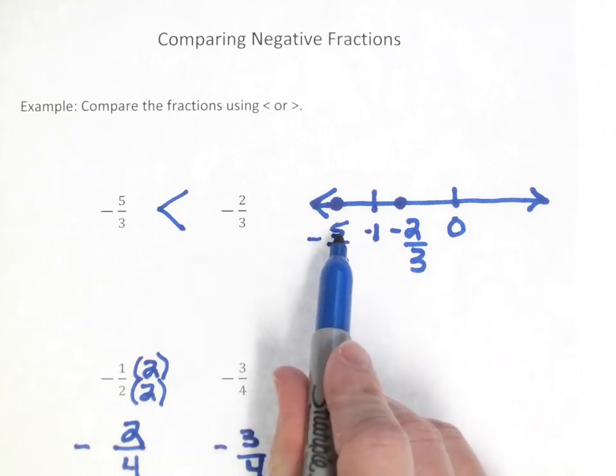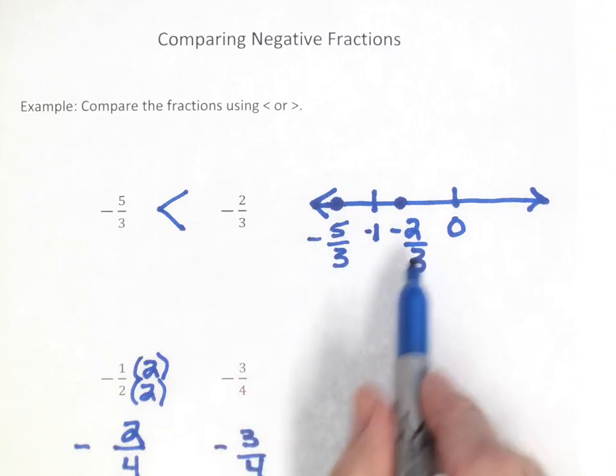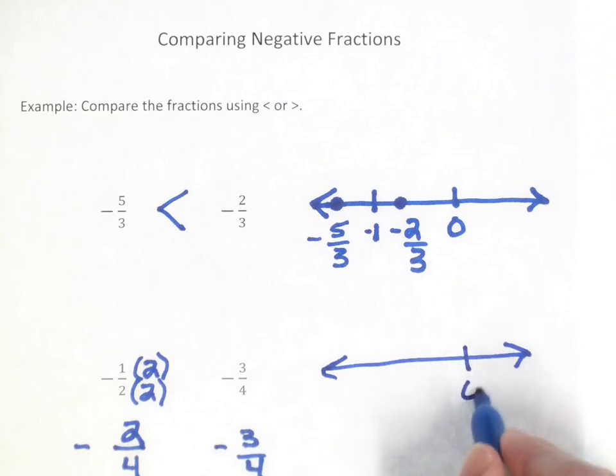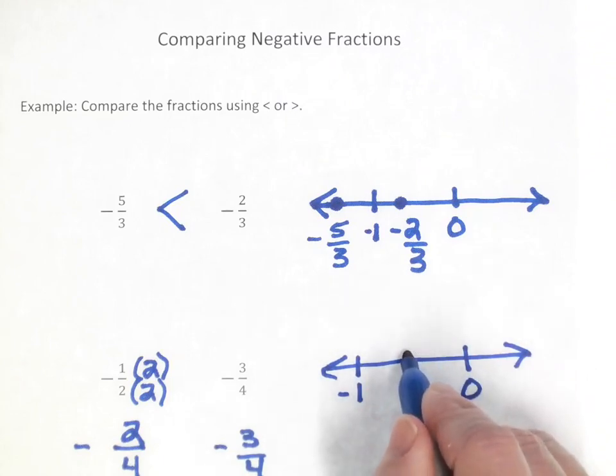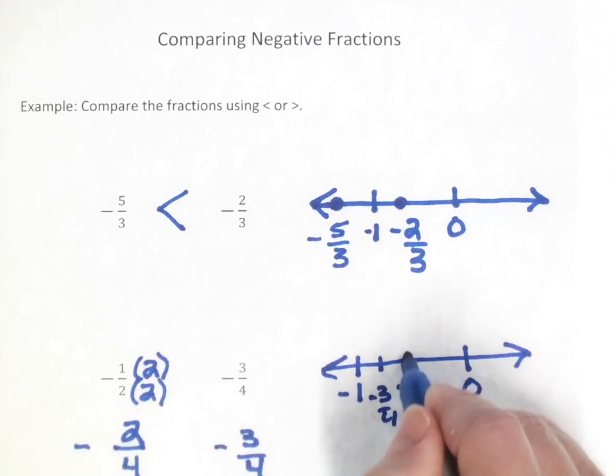So we have negative two-fourths. Is that less than or greater than negative three-fourths? As you can see from our last problem, negative five-thirds was to the left of negative two-thirds, so negative three-fourths would be to the left of negative two-fourths. So we'd have negative two-fourths would be about here, negative three-fourths would be about here.